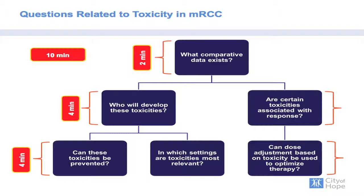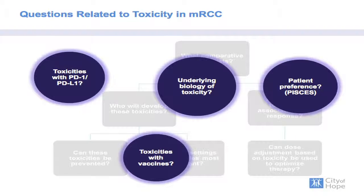We've addressed several questions related to toxicity in metastatic renal cell carcinoma. Due to time constraints, we haven't covered toxicities with novel agents such as PD-1 inhibitors and vaccine therapies, the biology of toxicity in depth, or patient preference designs such as PISCES or GEMINI. Nonetheless, I hope we've provided a framework for assessing toxicity in the context of therapeutic decision-making. Thank you.